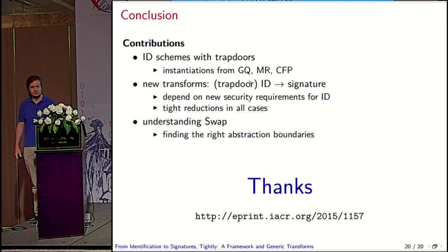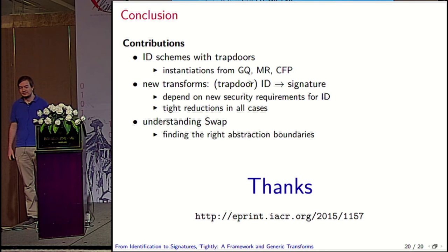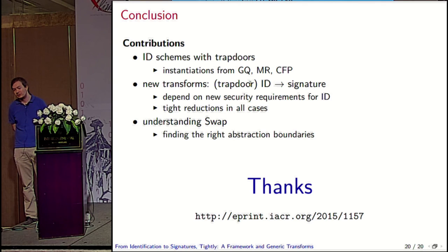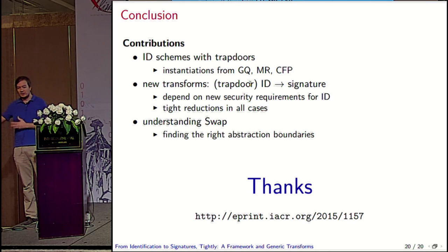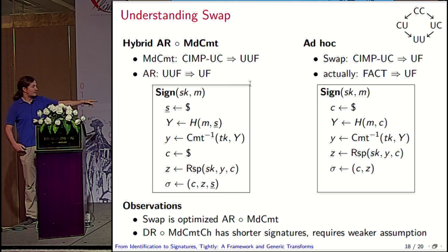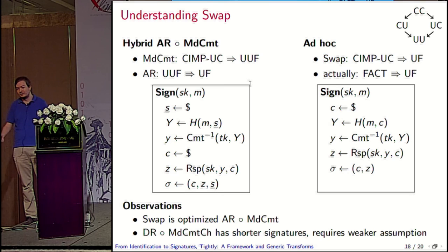Question: if you have a trapdoor commitment scheme like Guillou-Quisquater, can't you get a tight signature from a hash-and-sign construction? If you have a trapdoor permutation you can have tight signatures from hash-and-sign. This contribution is more about understanding the connections between ID schemes and signatures. It's not primarily to build a new signature scheme in the factoring-based setting — we do that too, but there's no point since other constructions have been known for 20 years.